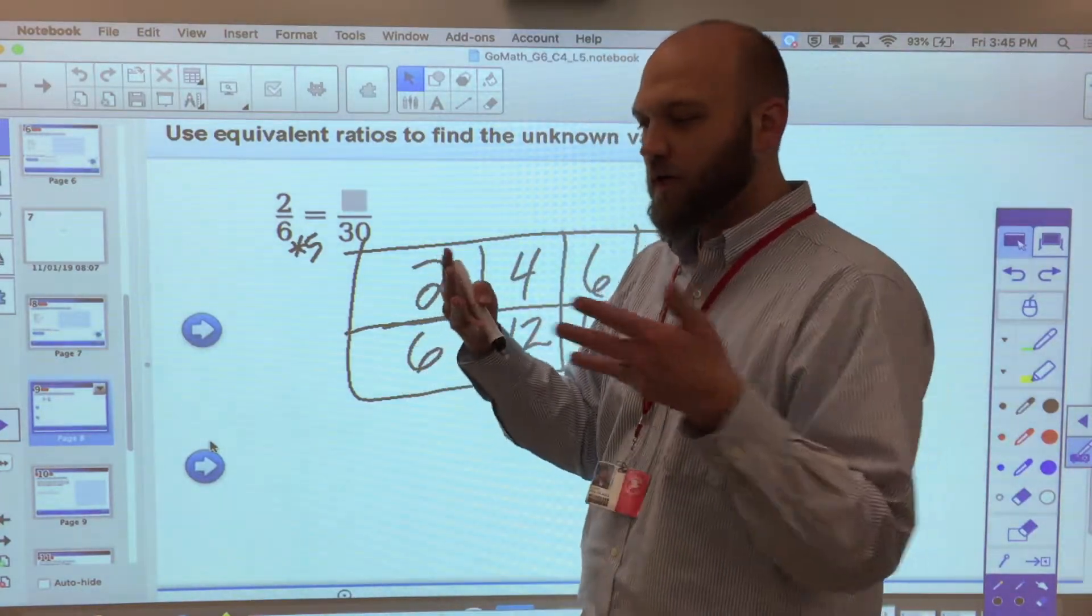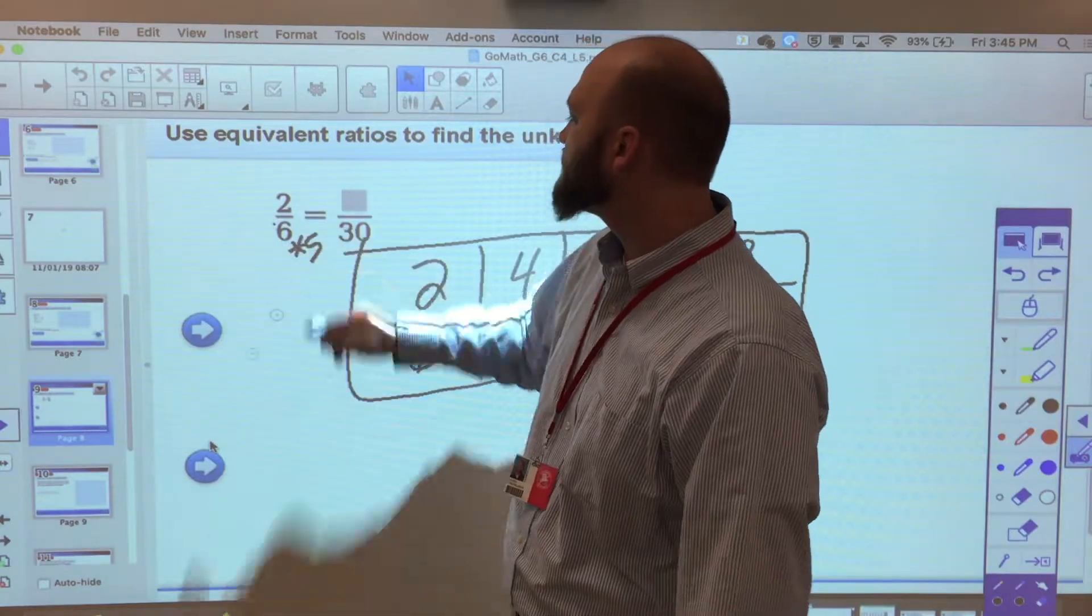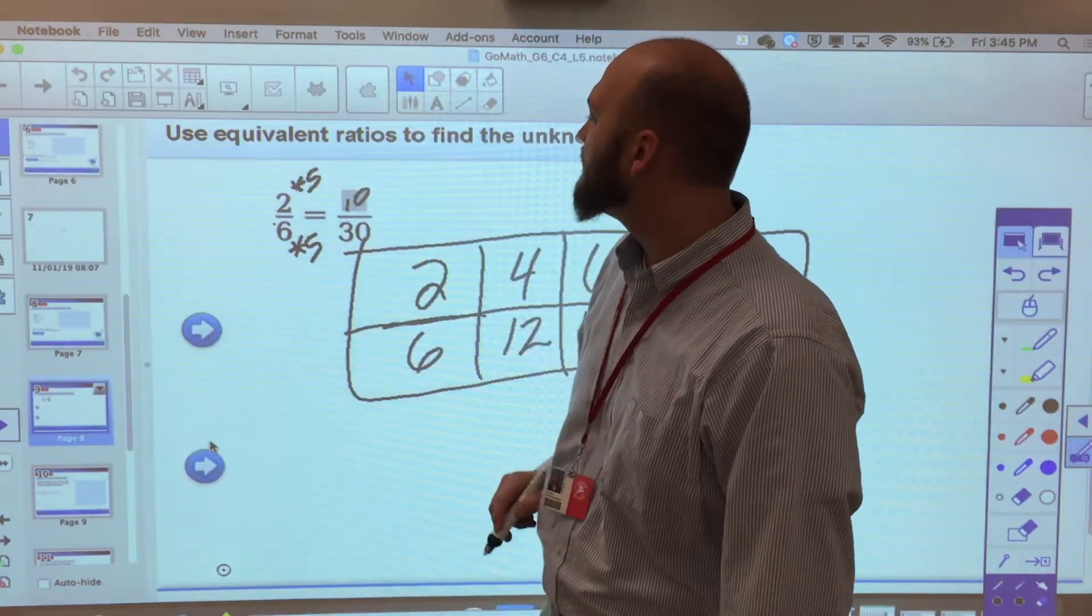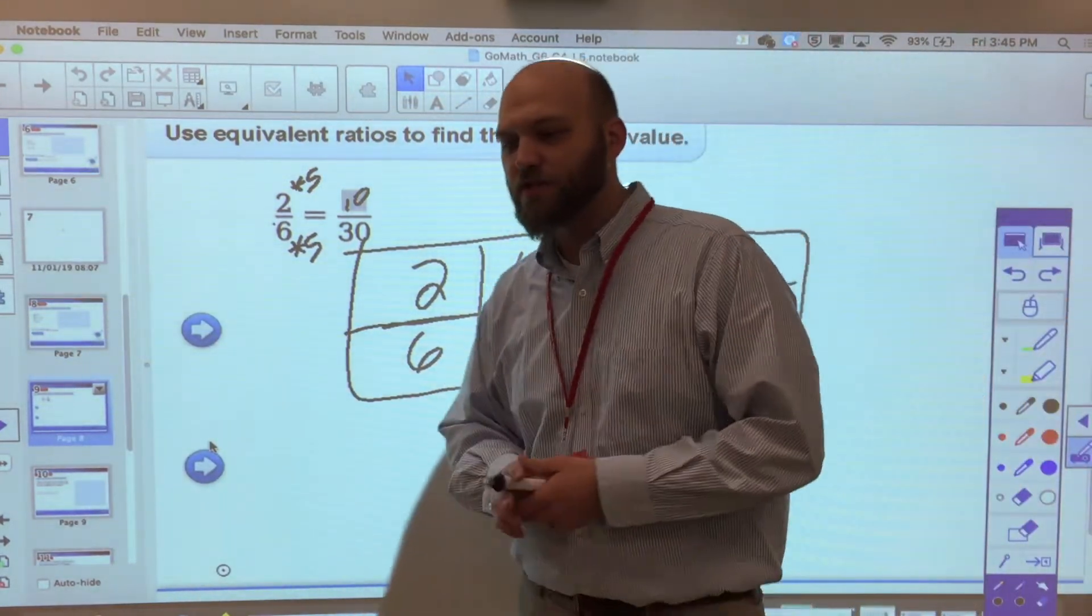But if I'm just looking at two equivalent ratios and looking at them as equivalent fractions, I know 6 times 5 is 30. And if I multiply the bottom by 5, I have to multiply the top by 5. And I would find that 2 times 5 is 10. So a 2 to 6 ratio is a 10 to 30 ratio.